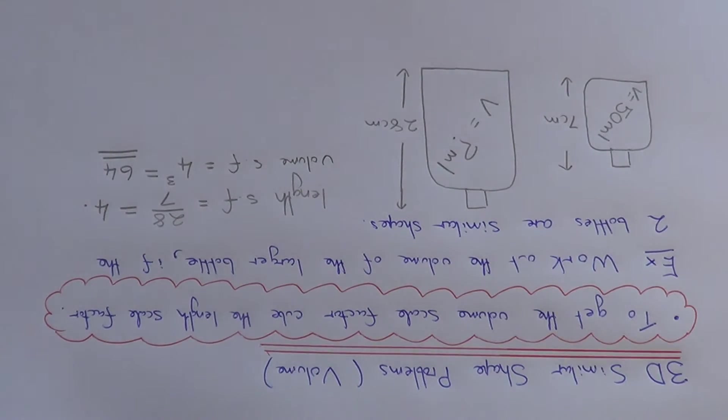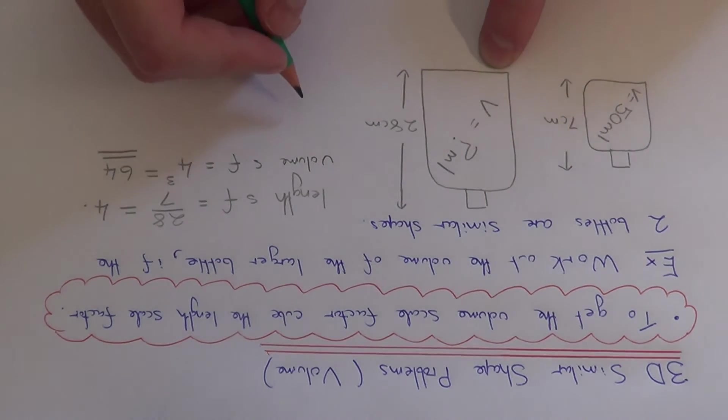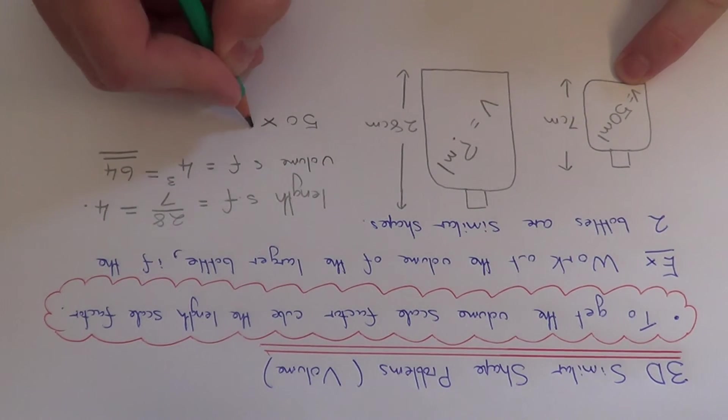So this is our important number here because this is telling us that the volume of the larger bottle is 64 times as big as the volume of the smaller bottle. So to give the volume of the larger bottle now we just need to times the 50 by the 64.